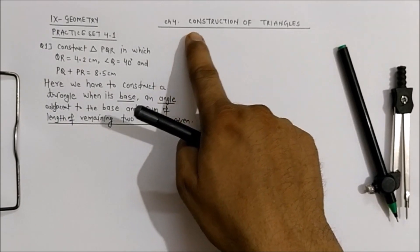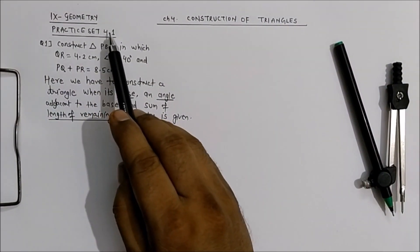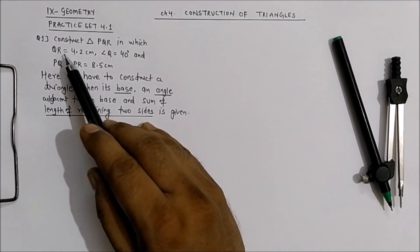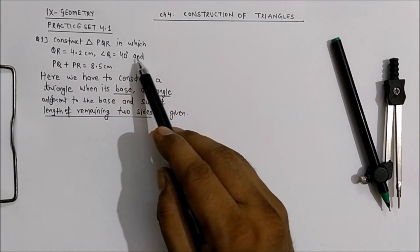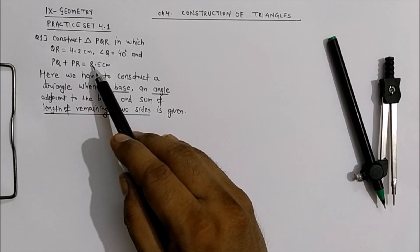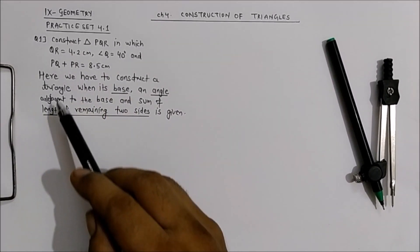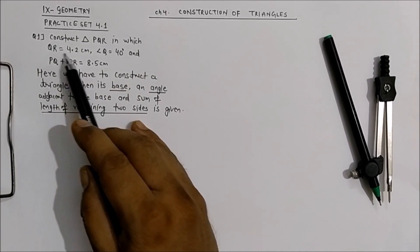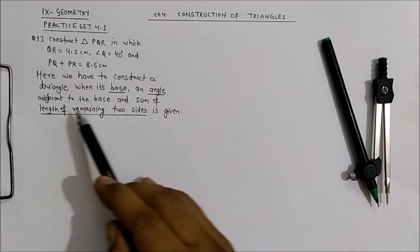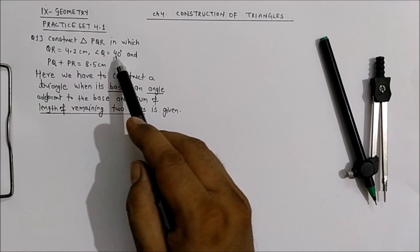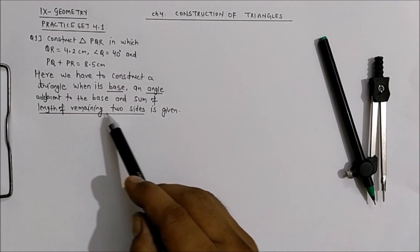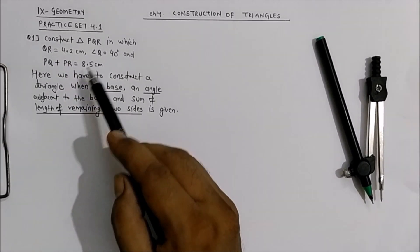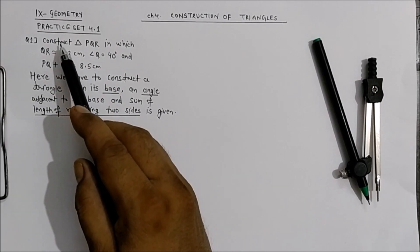Today in the topic Construction of Triangles, Practice Set 4.1, Question 1: Construct triangle PQR in which QR = 4.2 cm, angle Q = 40 degrees, and PQ + PR = 8.5 cm. The base QR is given, angle adjacent to the base Q is 40 degrees, and the sum of the lengths of the remaining two sides PQ + PR = 8.5 cm is given. With this information we have to construct triangle PQR.